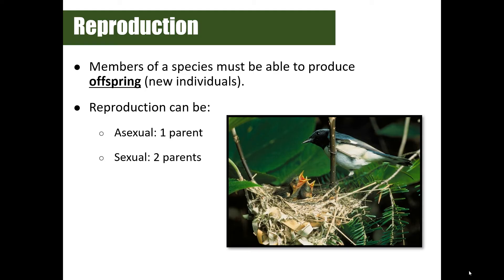Reproduction can happen in two ways: asexual reproduction, which requires only one parent, or sexual reproduction, which requires two parents. When we discuss meiosis and other topics throughout the course, we'll come back to this and elaborate on both types of reproduction.